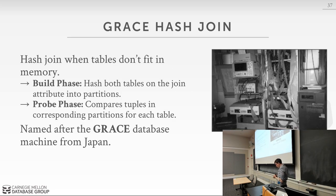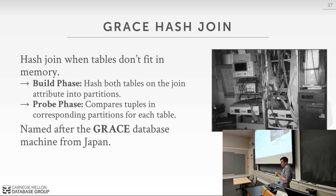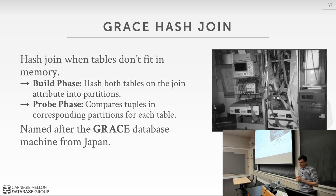The algorithm we use to handle hash joins larger than available memory is called the Grace Hash Join. It's named after a database machine project from the 1980s at the University of Tokyo called Grace. The system was never commercialized, but they published a paper describing this hash join technique, and for historical purposes everyone still calls it the Grace Hash Join. The basic idea is similar to external merge sort — we break up the problem into smaller chunks that can fit in memory, then do the join on those chunks.